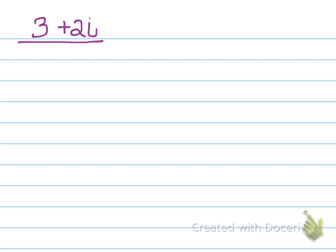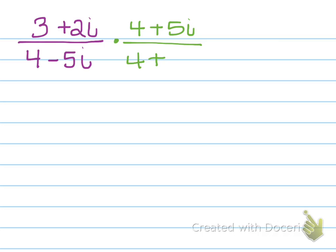This is important because when we divide, just like we're not allowed to have a radical in the denominator, we are also not allowed to have an imaginary number in the denominator. We're going to use the concept of the complex conjugate to get rid of that imaginary number in the denominator. For example, if I gave you the fraction 3 plus 2i divided by 4 minus 5i, to get rid of that minus 5i in the denominator, we're going to multiply the numerator and the denominator by the complex conjugate — so 4 plus 5i over 4 plus 5i. We need to put parentheses because we have a binomial times a binomial on the numerator and the denominator.